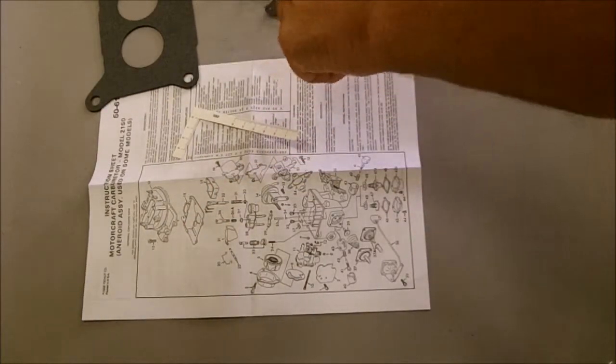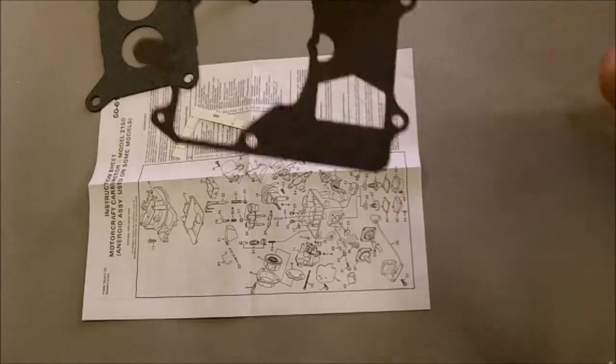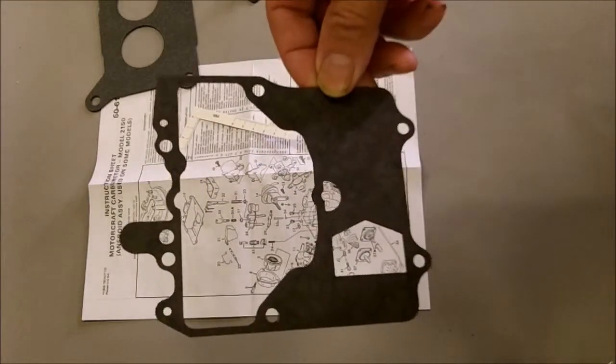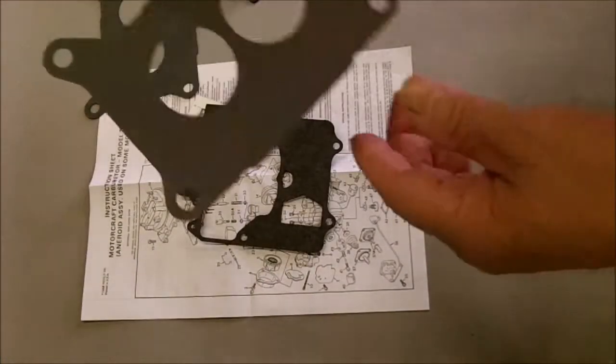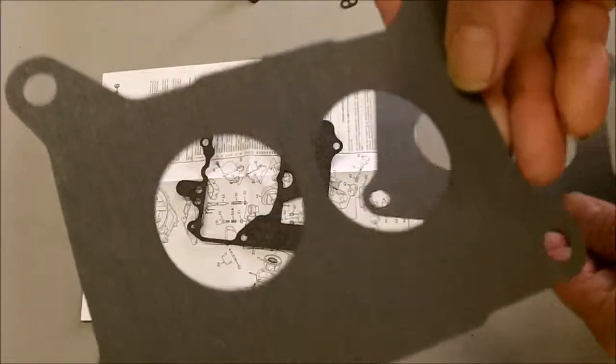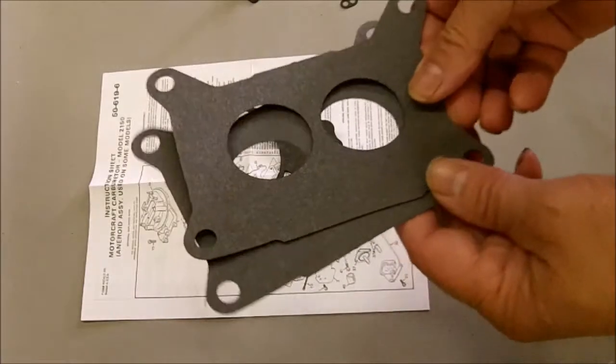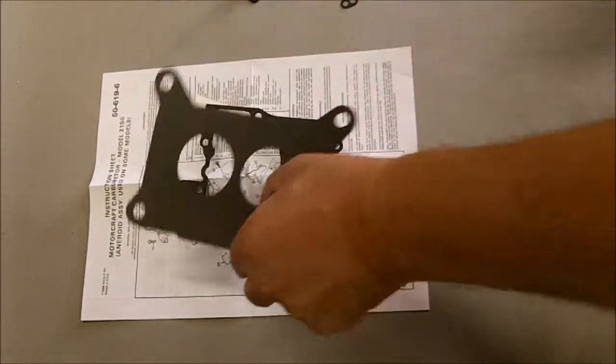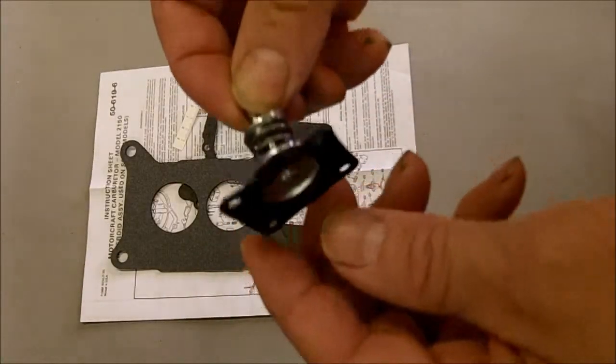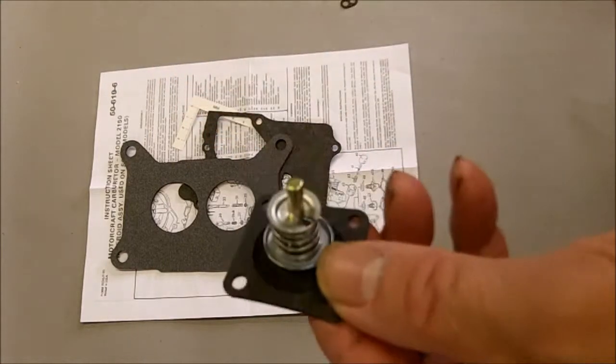New float bowl gasket and this is your mounting gasket. There's two of them. You probably may have a spacer on your vehicle, and one goes under it, one goes over it. This is your solar pump diaphragm.